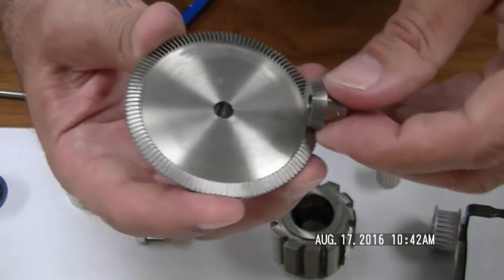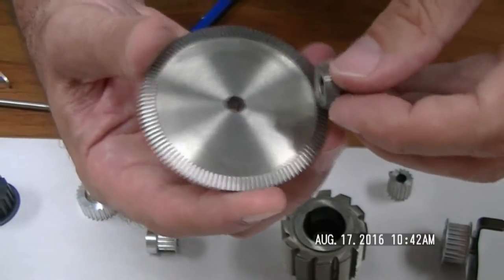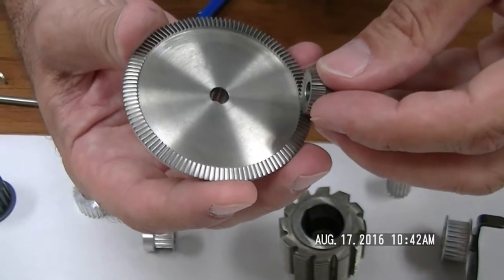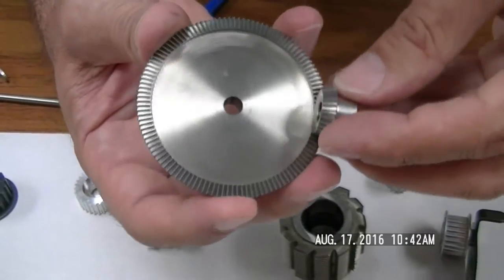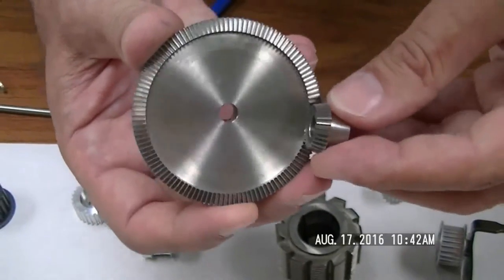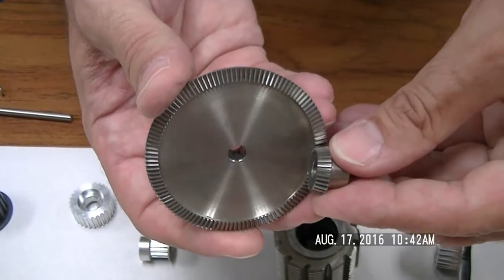What you have here, in this case, you can have like a 10 to 1 reduction. That's probably as high as we would want to go. But if you have a right angle drive, a lot of people like this sort of setup.